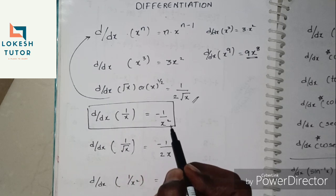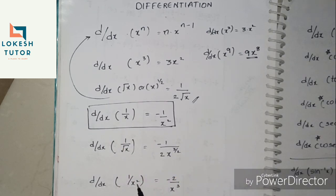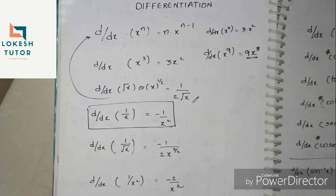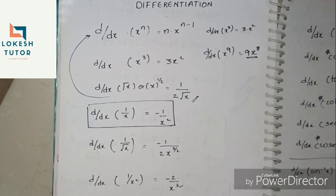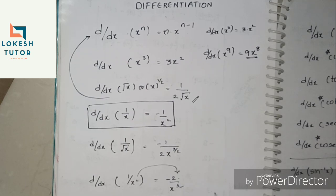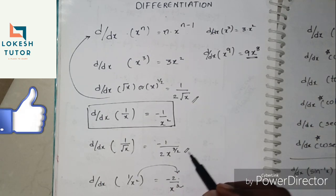d/dx of 1/x is minus 1/x². d/dx of 1/x² gives minus 2/x³. d/dx of 1/x³ gives minus 3/x⁴. So if you have x² in the denominator, the degree increases by one in the denominator and a minus symbol appears. d/dx of 1/x⁵ gives minus 5/x⁶. We will have a formula — if you have the formula, you will have the answer.